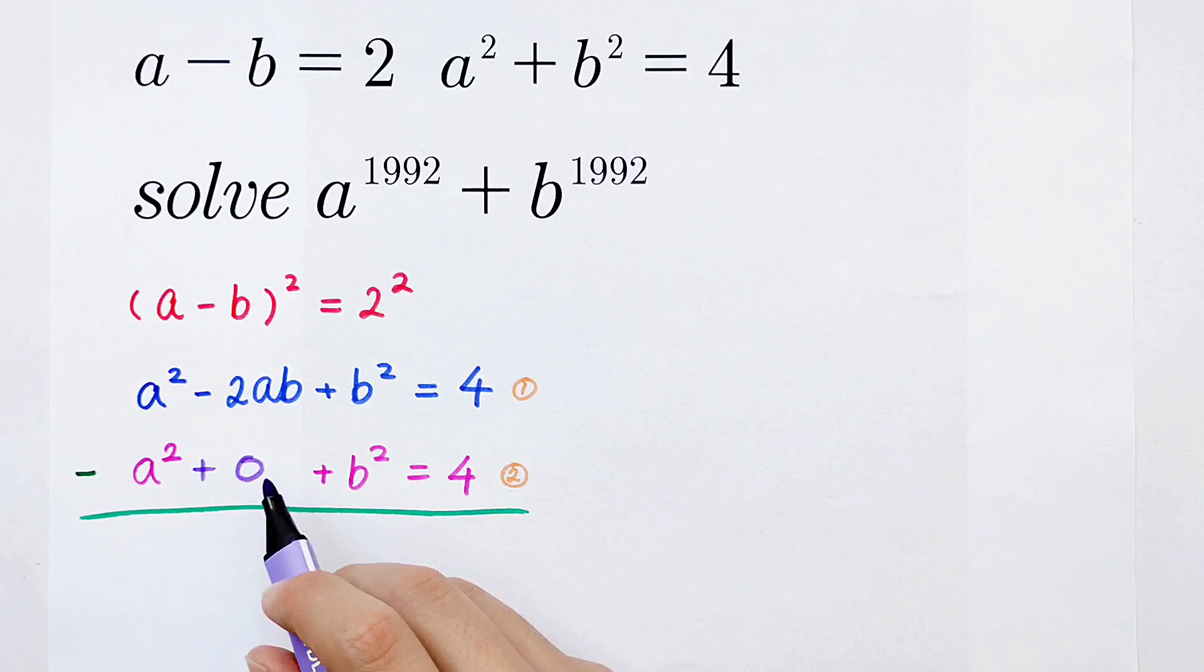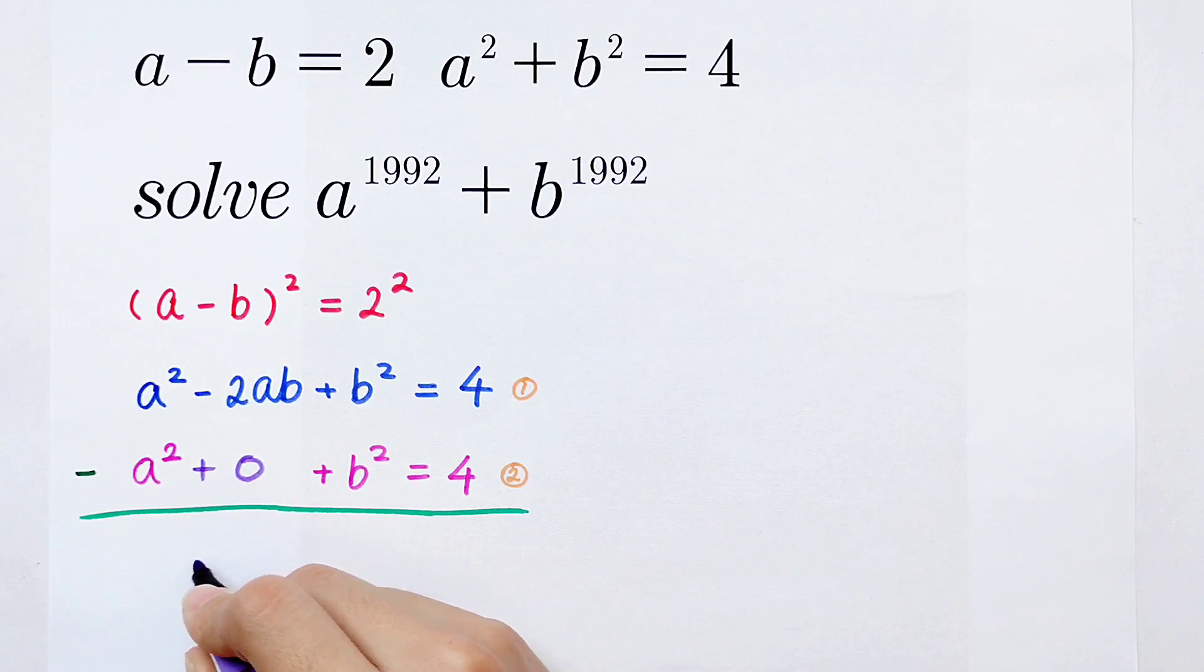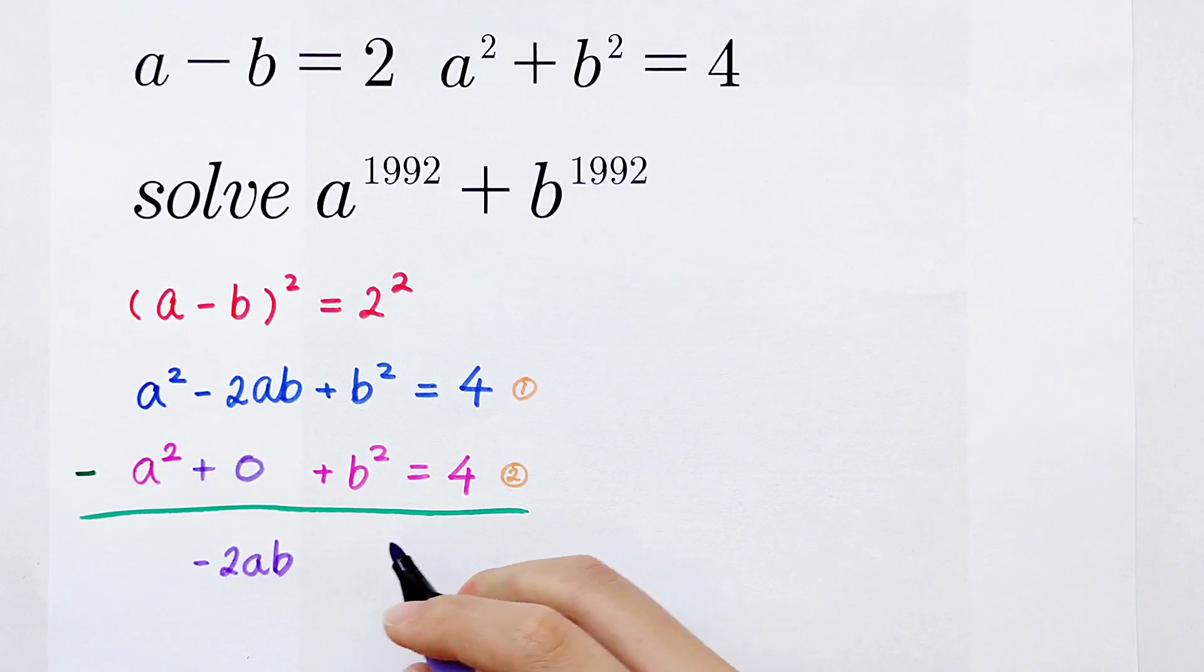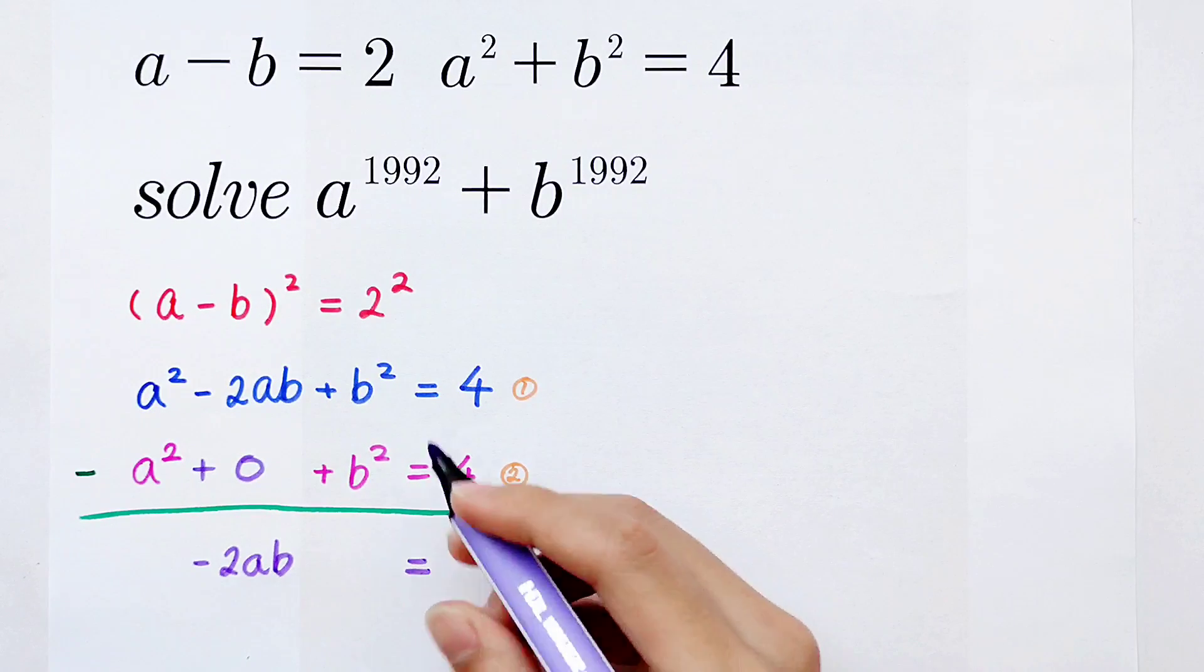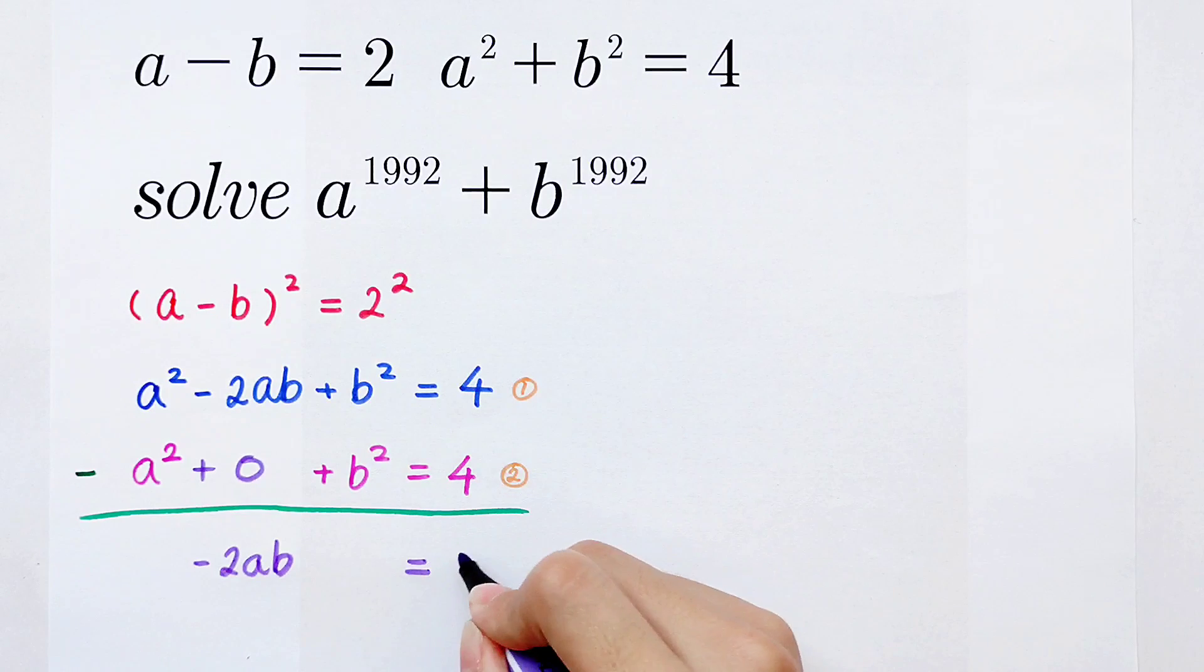Minus 2ab minus 0 is minus 2ab. b² minus b² is 0, and 4 minus 4 is 0. So we can get -2 times ab is equal to 0.